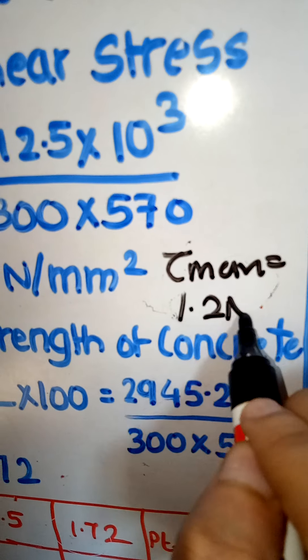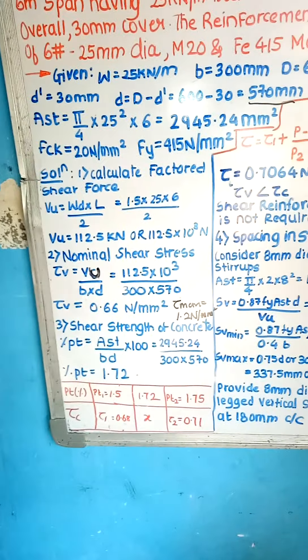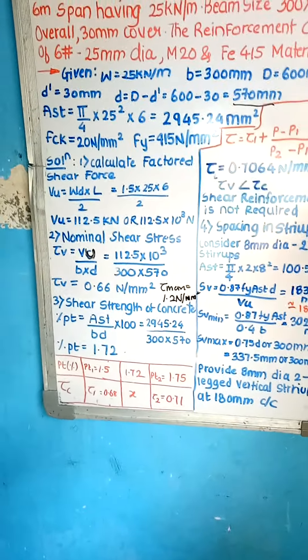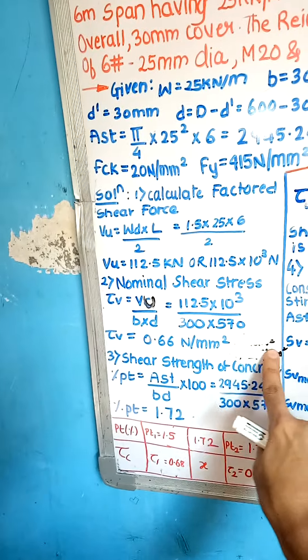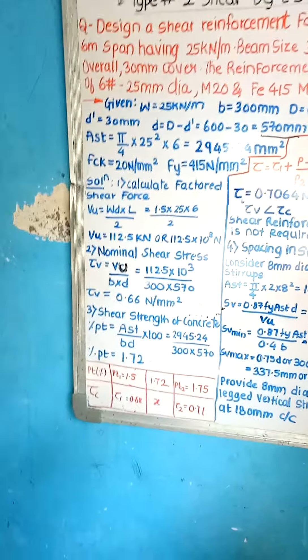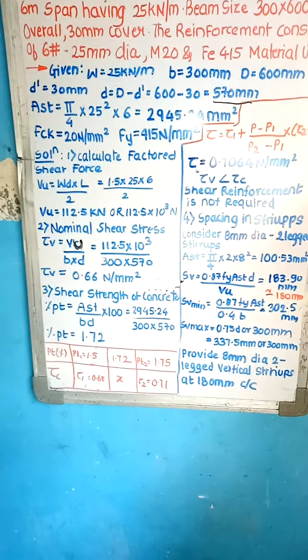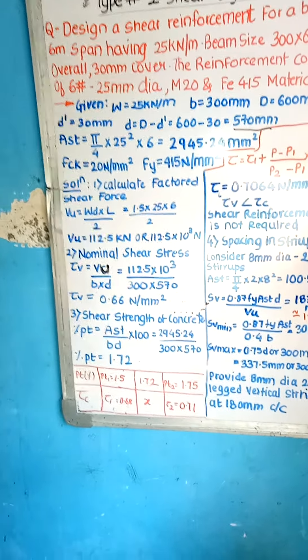Now here tau V max value is around 2.1 to 2.8 newton per mm square depending on grade of concrete. For M30 tau max value is different, for M20 tau max value is different. We have to check that tau max should be greater than tau V. So this is done. Now here the question doesn't ask for this check, so we won't provide this check in this question.